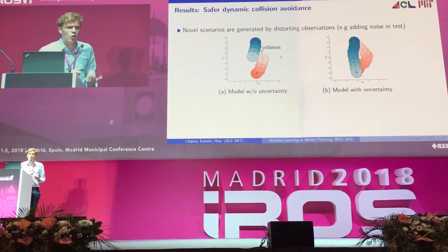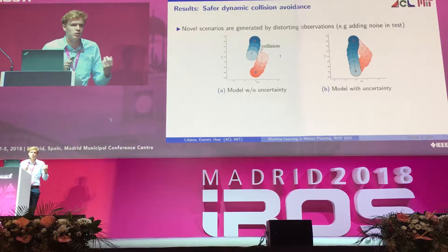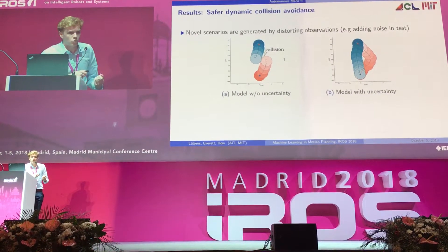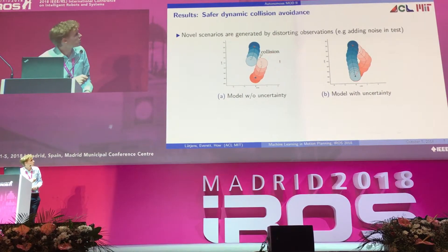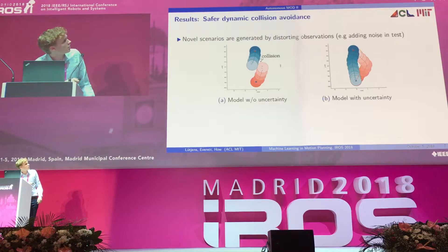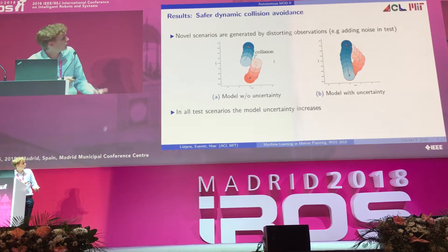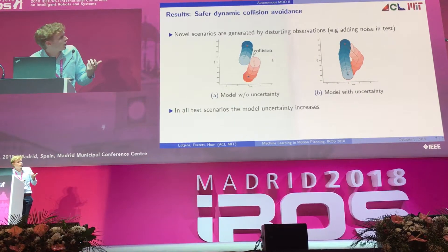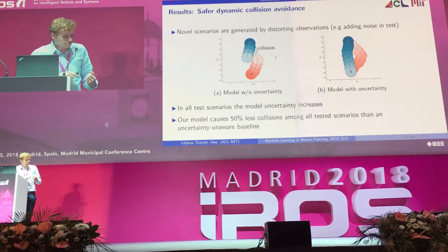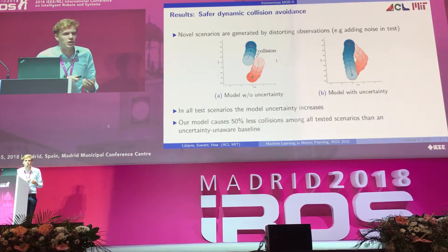The same holds for more complex dynamic environments, where instead of the left-right example we create novel scenarios by distorting observations during testing. In this example we trained without Gaussian noise and added Gaussian noise to the observations at test time. A model without uncertainty fails to generalize and collides with the dynamic blue obstacle. Our model with uncertainty acts more cautiously and avoids it. Across a variety of distortions, model uncertainty continuously increased, indicating uncertainty, and the agent caused 50% fewer collisions than the uncertainty-unaware baseline.